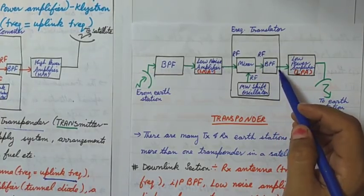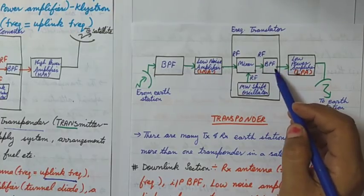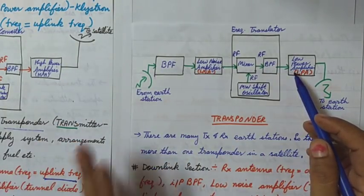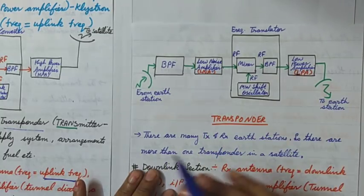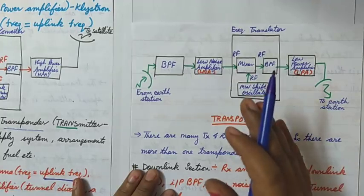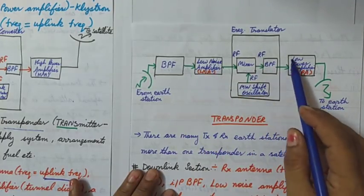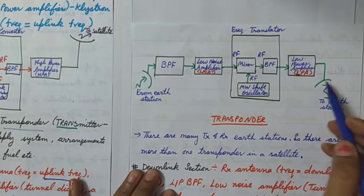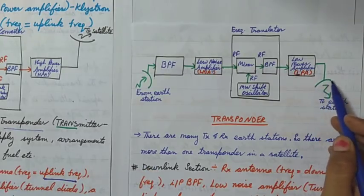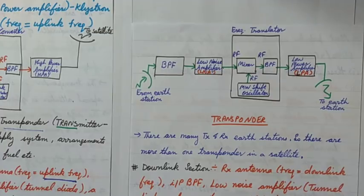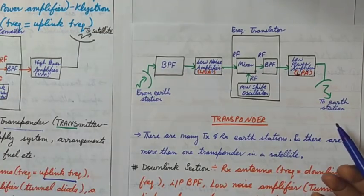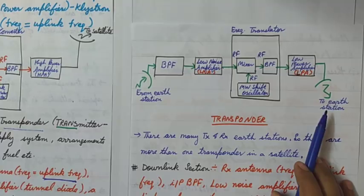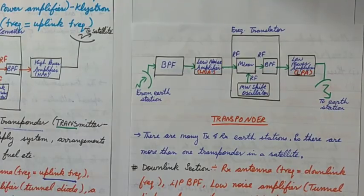Since the signal has to be sent back to the earth station, less power is required — anything moving downward requires less power than something moving upward. So a low power amplifier sends the signal back through the transmitting antenna to the earth station receiver, which is the downlink section. This completes the block diagram of the transponder, which you must be able to draw in exam questions.